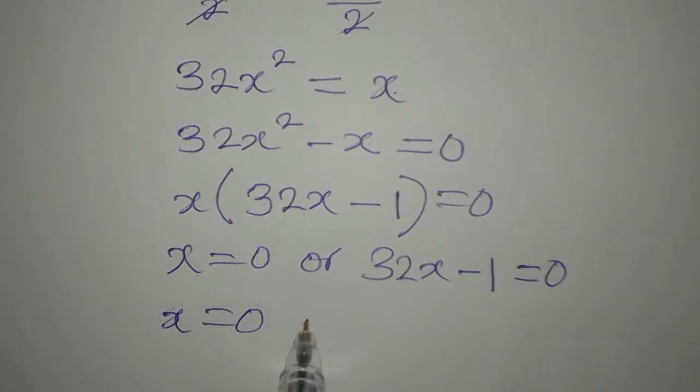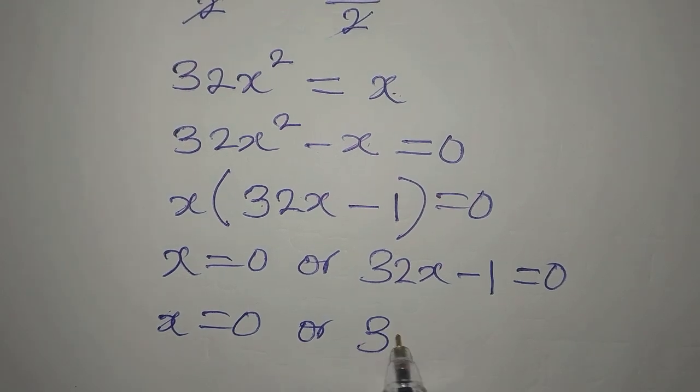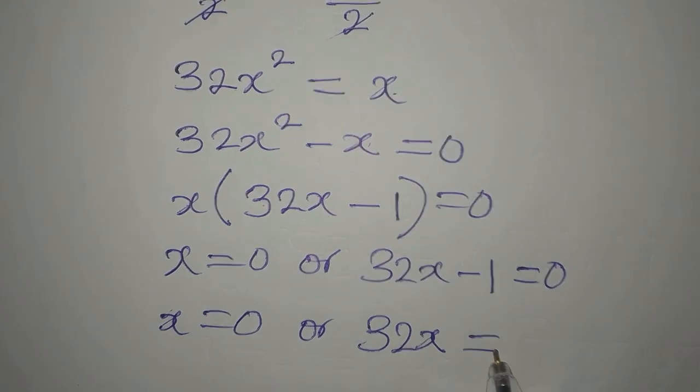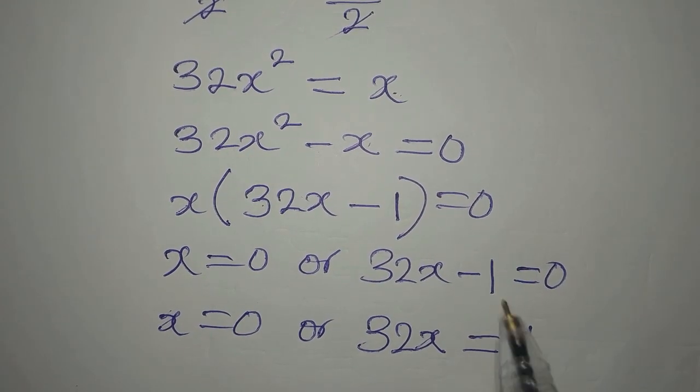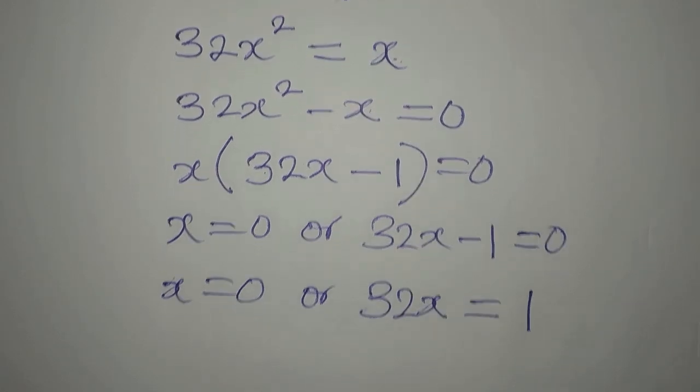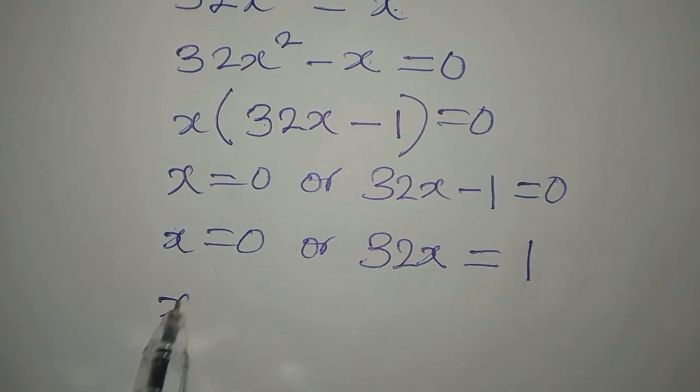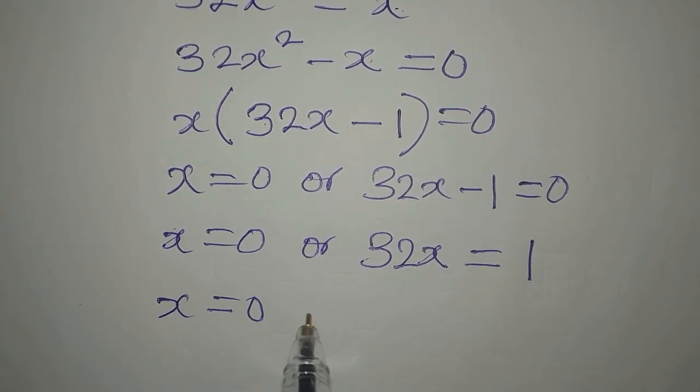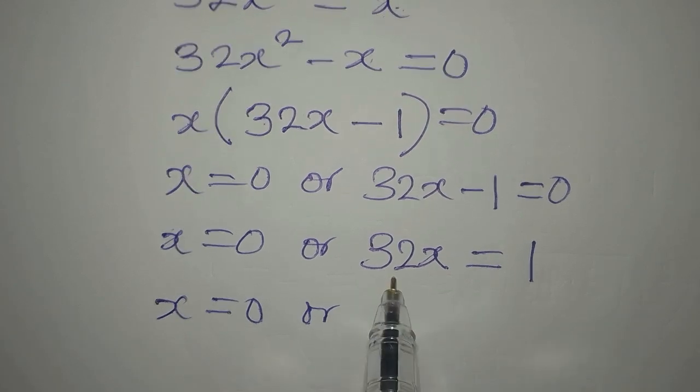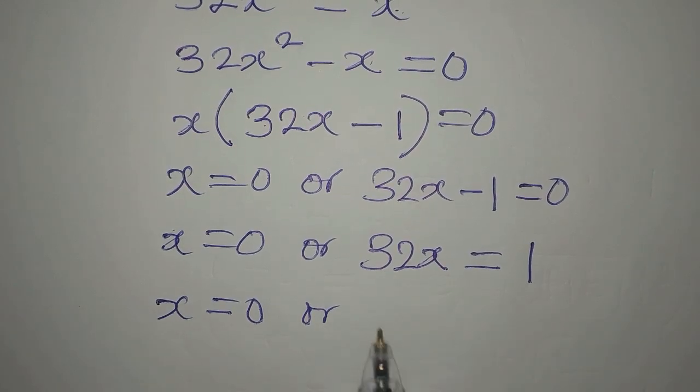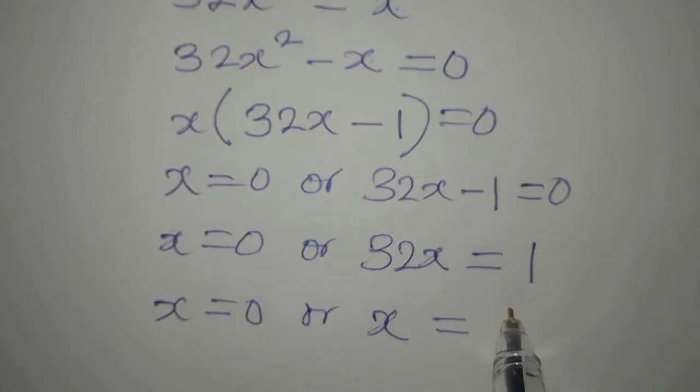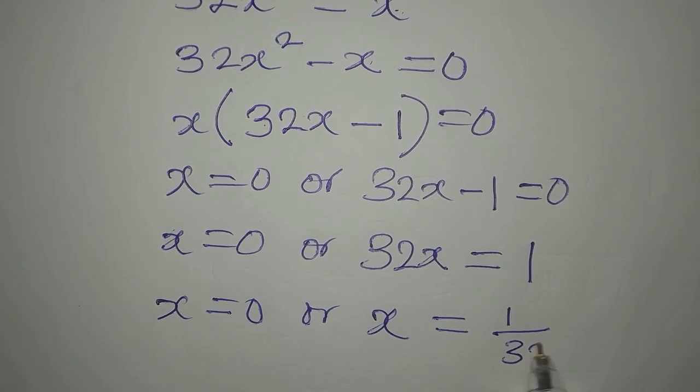x here remains 0. On this side, 32x is equal to 1. This negative 1 becomes positive on the right. As our x remains 0, here we can divide both sides by 32, so that x will be 3, and it will now be 1 over 32.